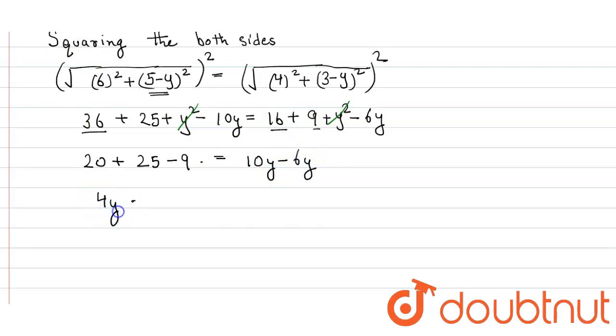Here we get 4y is equal to 45 minus 9. We get y is equal to 36 upon 4 is equal to 9.